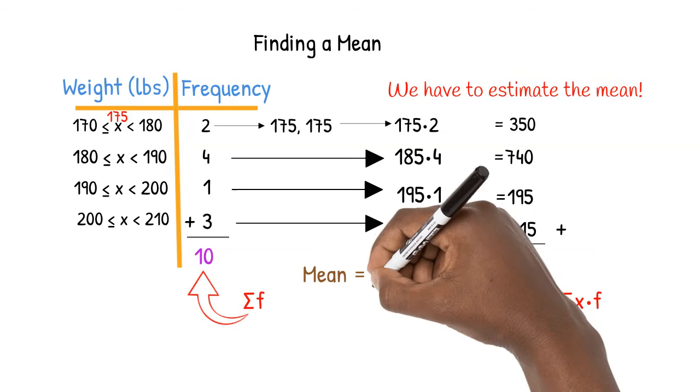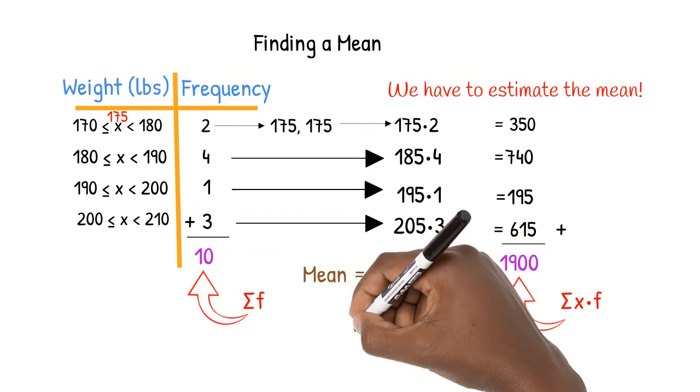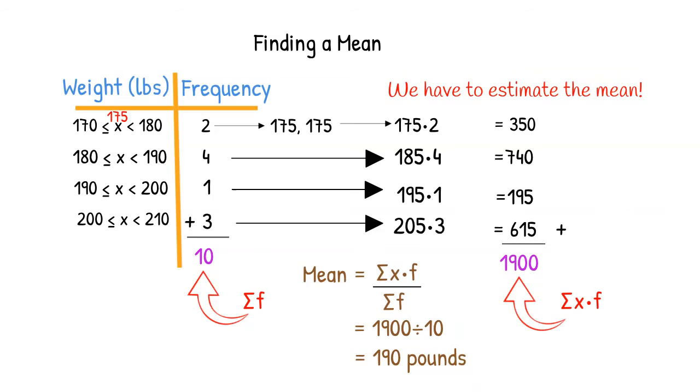The mean is equal to 1900 divided by 10, which is equal to 190 pounds.